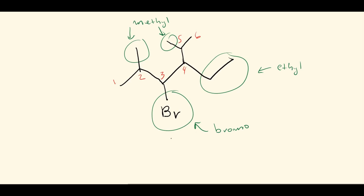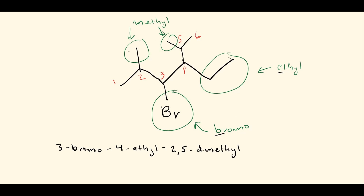Putting it all together alphabetically: B comes first — bromo is at carbon three, giving 3-bromo. E comes next — ethyl is at carbon four, giving 4-ethyl. Then the two methyl groups at carbons two and five: 2,5-dimethyl. The parent chain is six carbons long, so it's hexane. The final name is 3-bromo-4-ethyl-2,5-dimethylhexane.